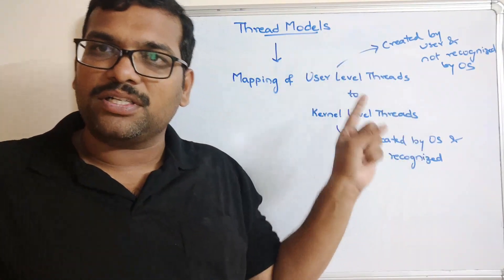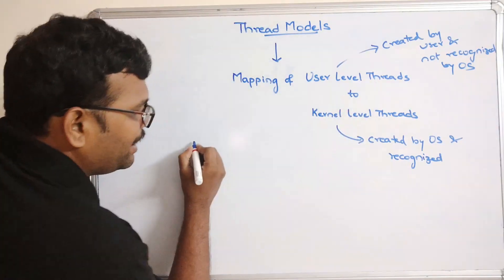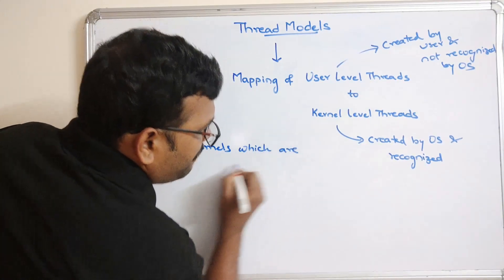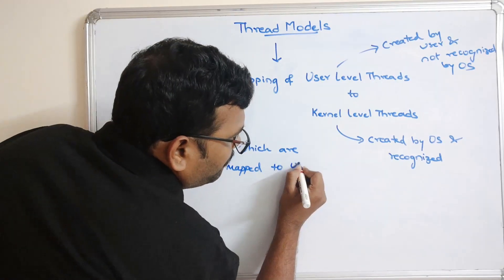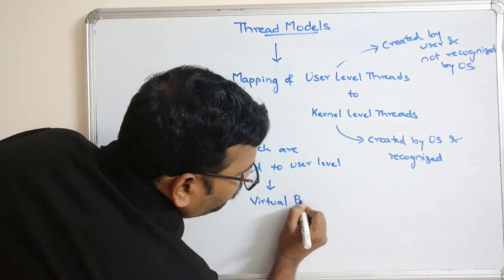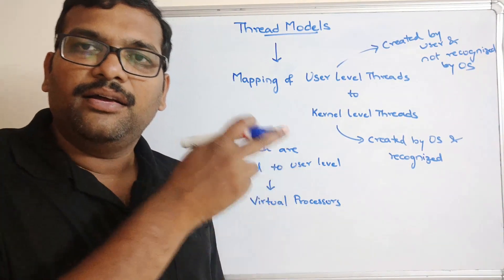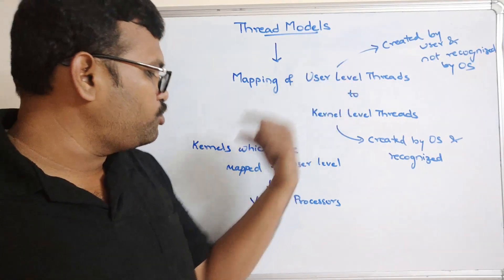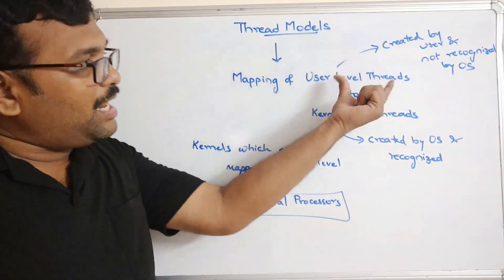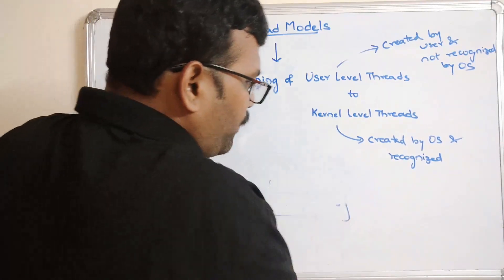Only the kernel level threads are recognized by the operating system — it cannot recognize user level threads. So we have to map user level threads to kernel level threads in order to execute them. This mapping process is called thread models. The kernels which are mapped to user level threads are known as virtual processors. These kernels are created by the operating system, and the user level threads are executed by these virtual processors.